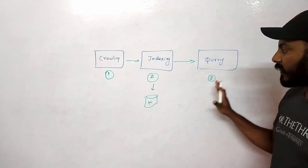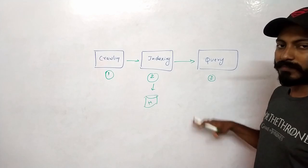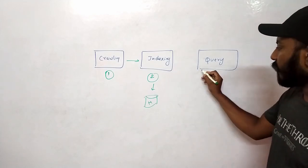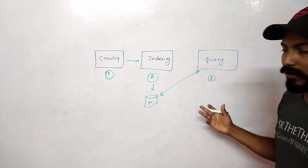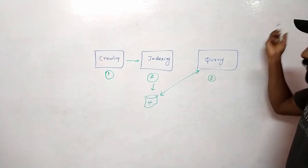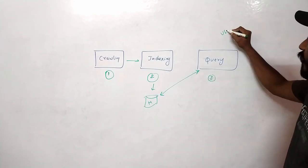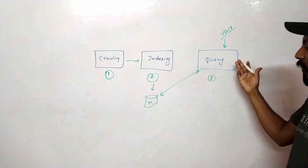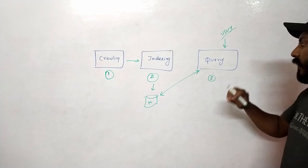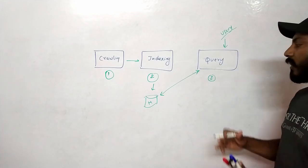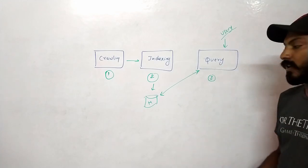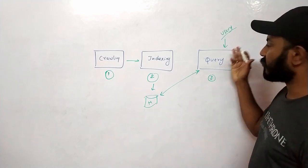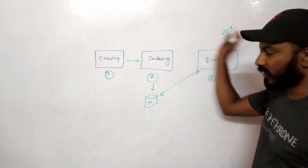The indexer does the indexing process on all of the web pages the crawler has crawled and emits the metadata into some kind of persistent storage. Then the query happens. Users or any other systems who want to see results issue queries using the query system. The query looks into the metadata and then gives the results to the users.